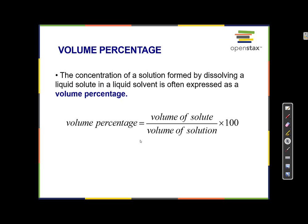Volume percentage: the concentration of a solution formed by dissolving a liquid solute in a liquid solvent is often expressed as a volume percentage. In the last example we were looking at bleach, and sodium hypochlorite is a solid — it's an ionic compound that comes in a bottle like a salt, and you could weigh it with a spoon and put it on a balance.